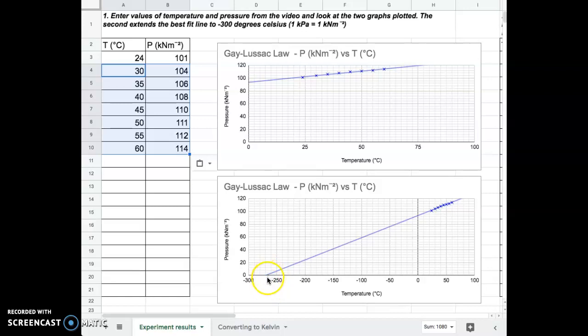And this is the Kelvin scale, and absolute zero is zero here, and that's as cold as can possibly be. You can't have a negative Kelvin temperature, because that's absolute zero right there.